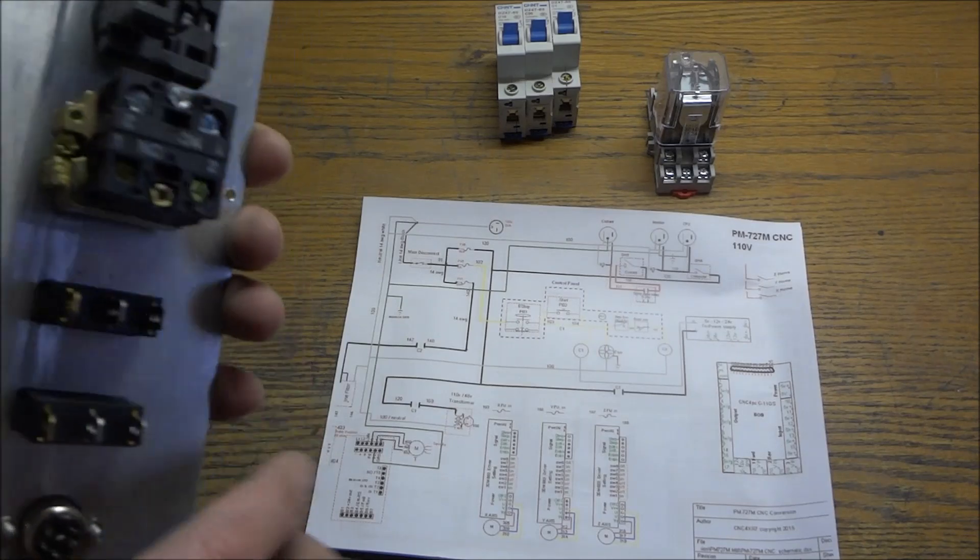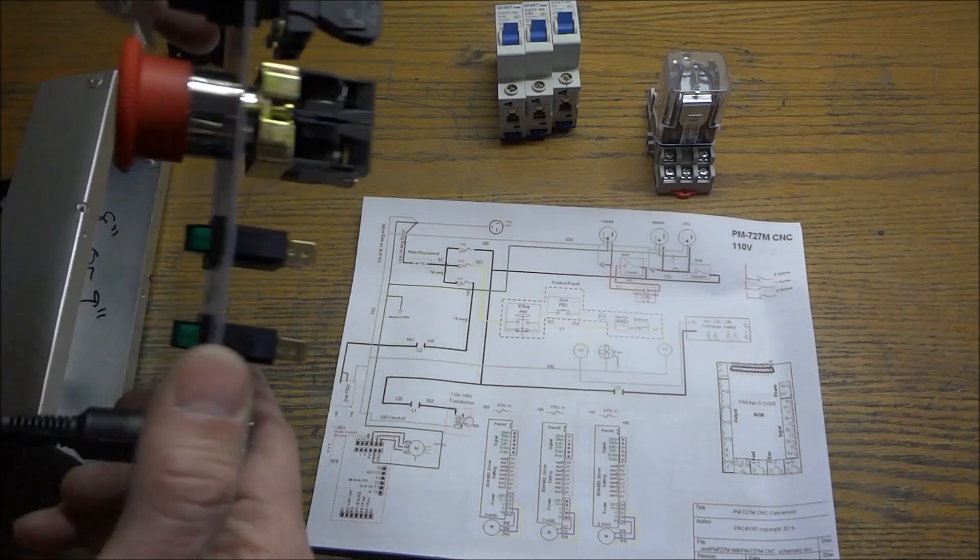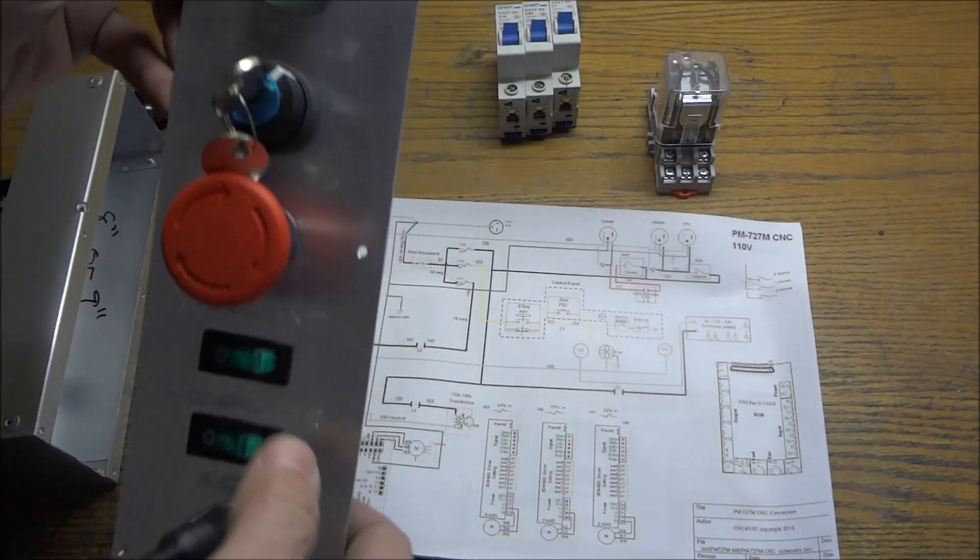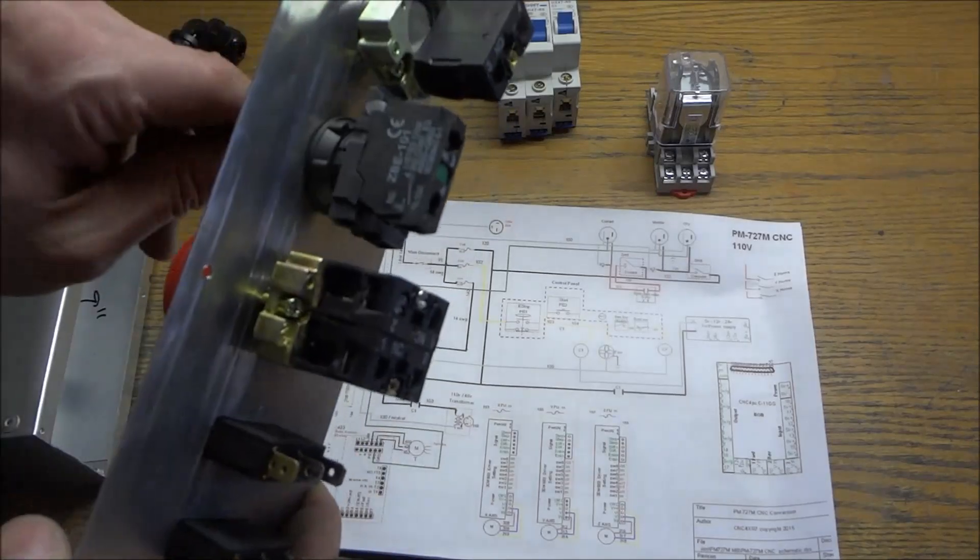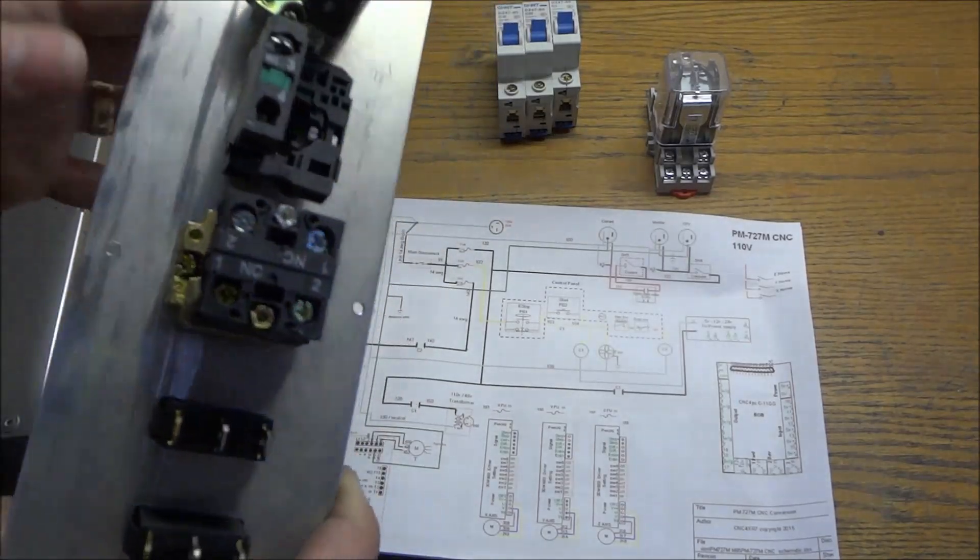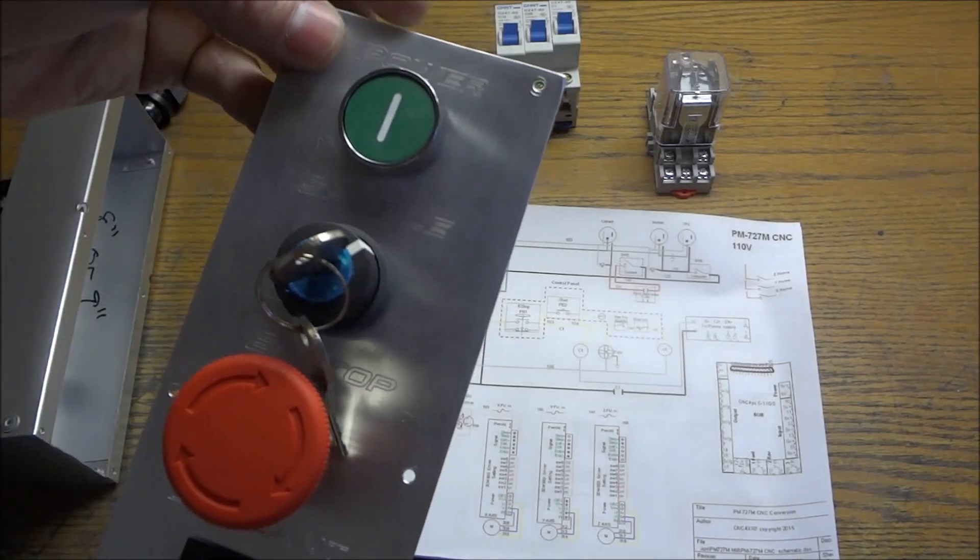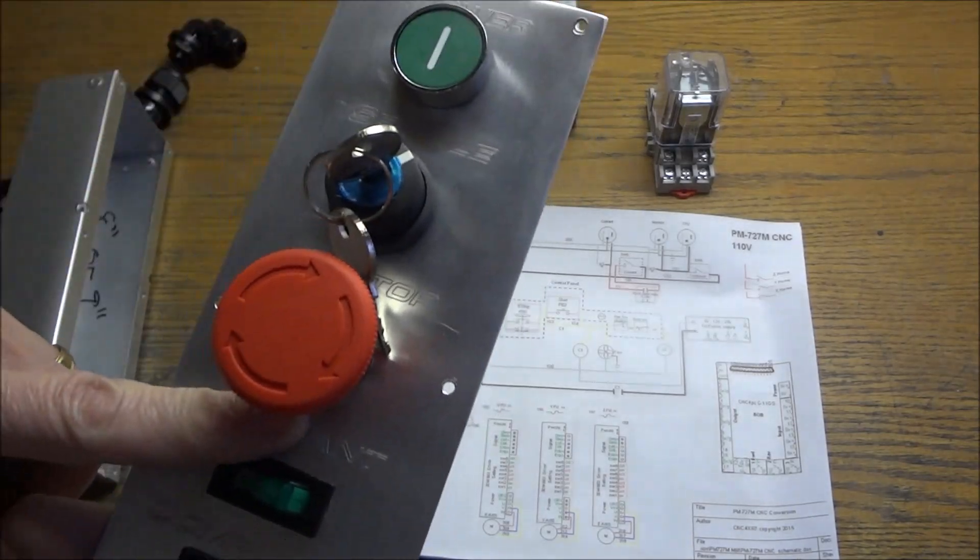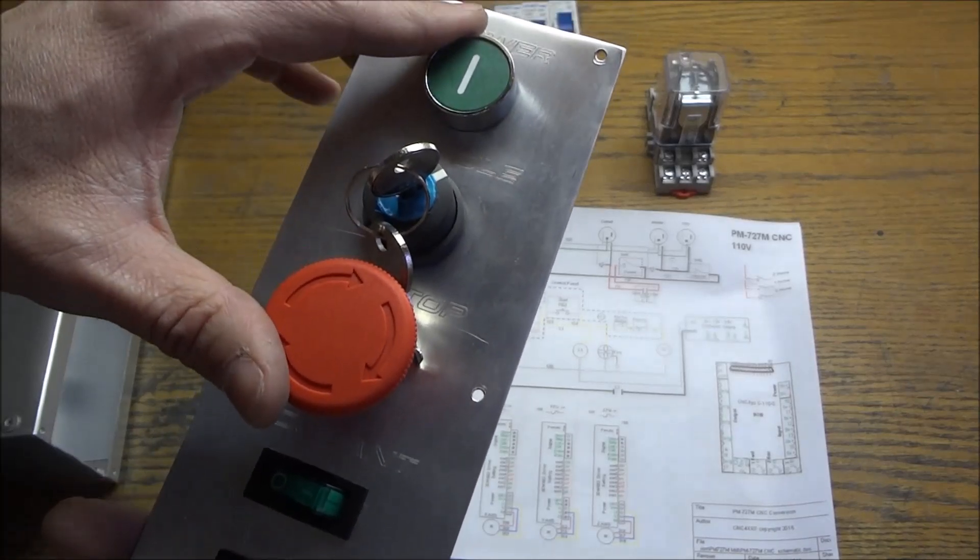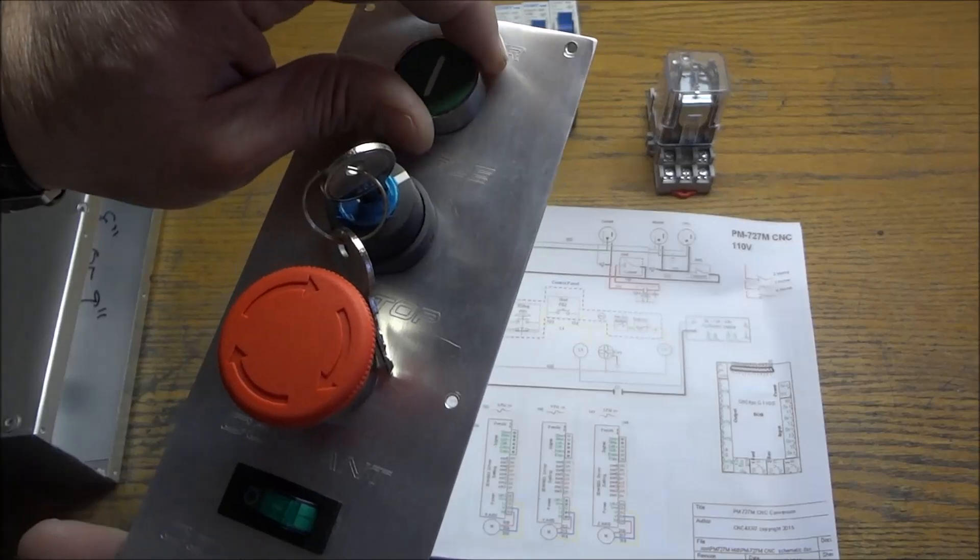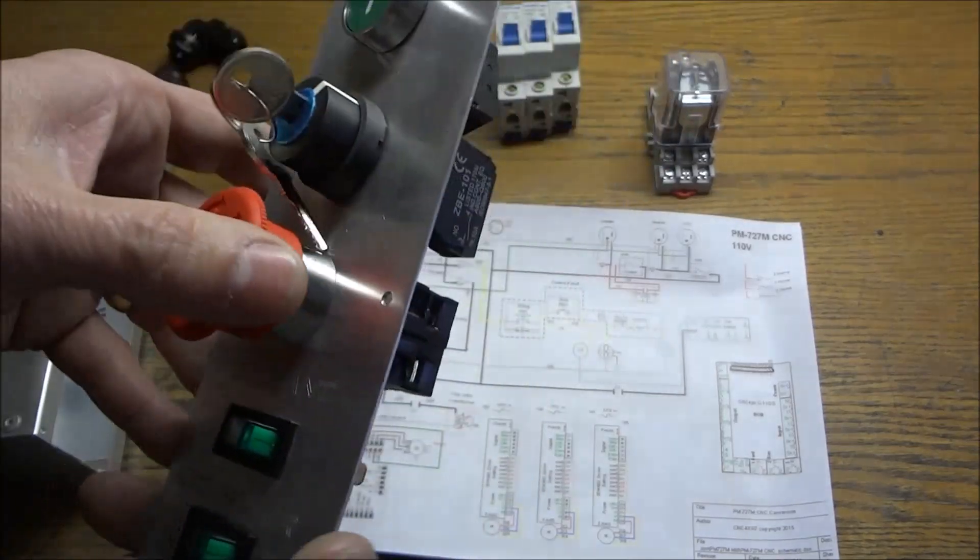I've got everything wired on my front panel now. I've got my rocker switches, the e-stop, the spindle switch and my power on button. If these buttons look familiar, it's because they're the exact same buttons that are on the G0602. I found them on eBay, ordered them, and that way everything kind of looks the same.